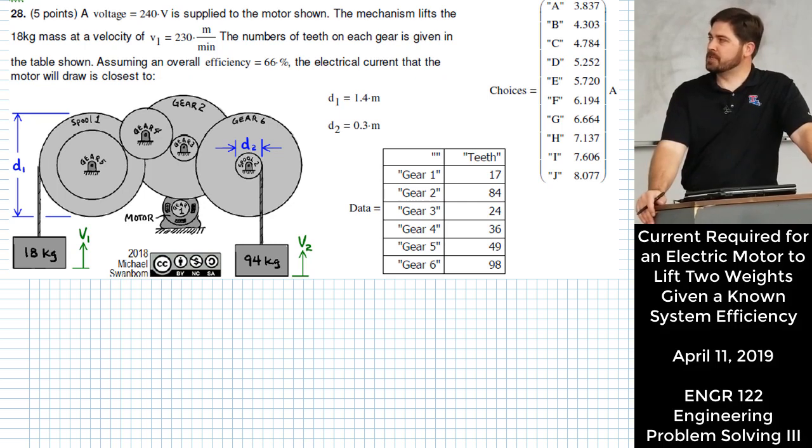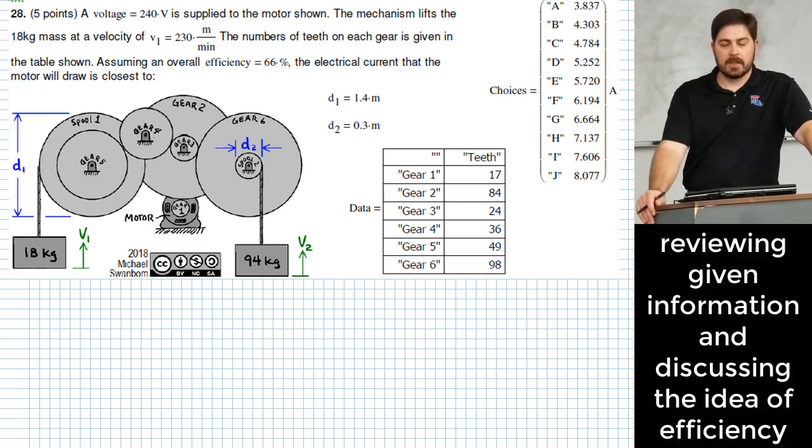We know how much voltage is being supplied to the motor and so what we're supposed to do is figure out how much current the motor will draw as a result of it having to lift these two weights. The other piece of info that we know is how fast weight number one on the left is moving. It says it's moving 230 meters per minute. We're given how many teeth are on each of the gears and we're also given the diameters of the two spools that are taking up the rope to lift the two weights.